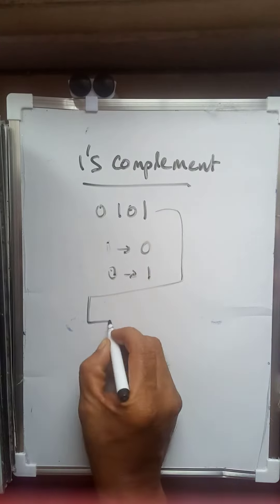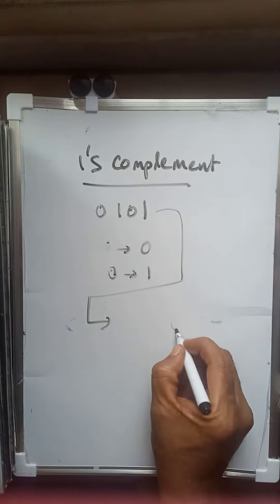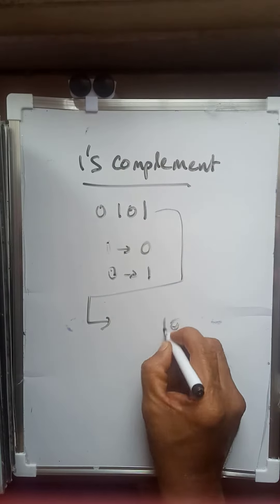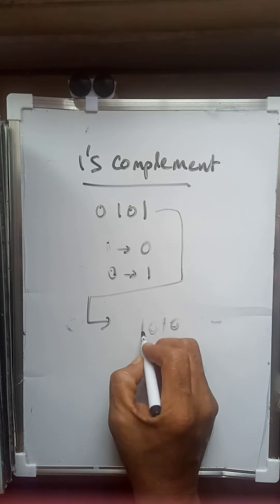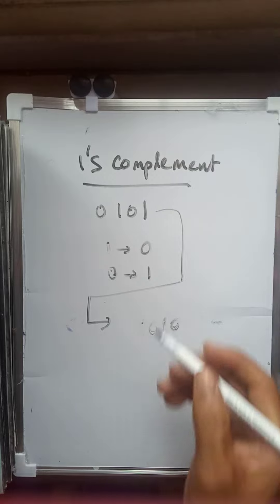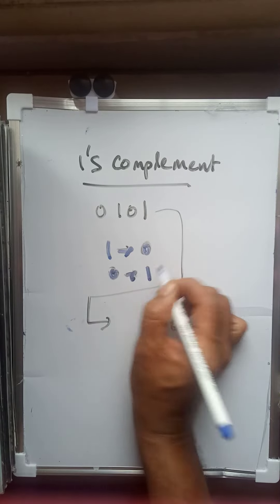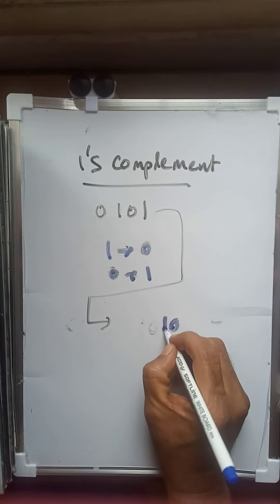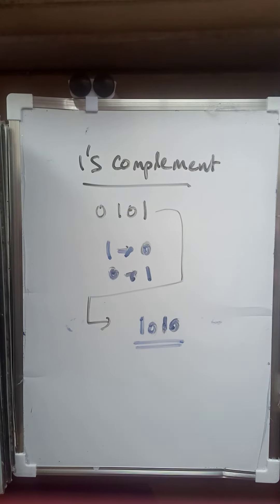So the one's complement of this number is found by converting each bit: the first bit converts to zero, next is one, next is zero, next is one. One converts to zero and zero converts to one for each position. This is the one's complement of the given number.